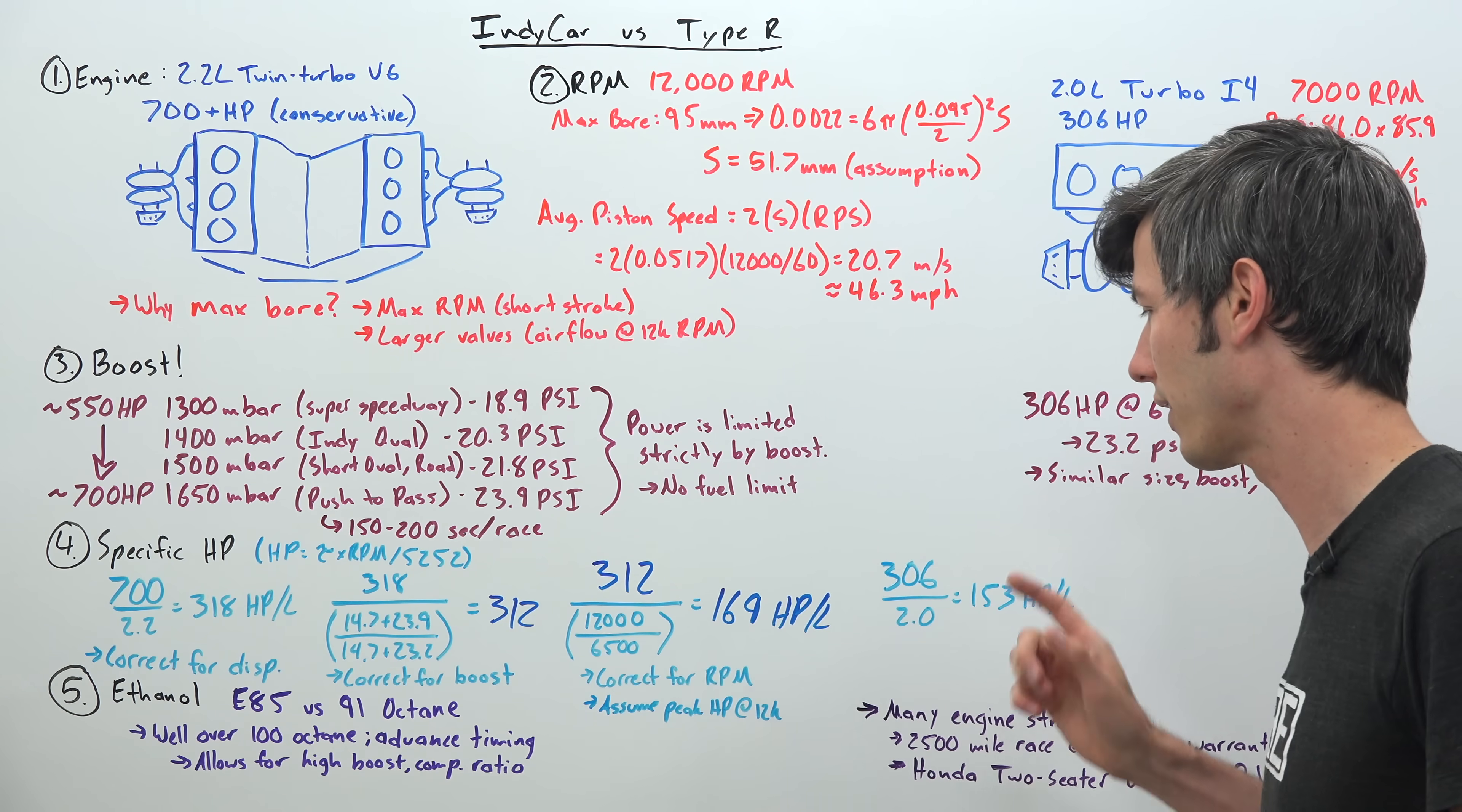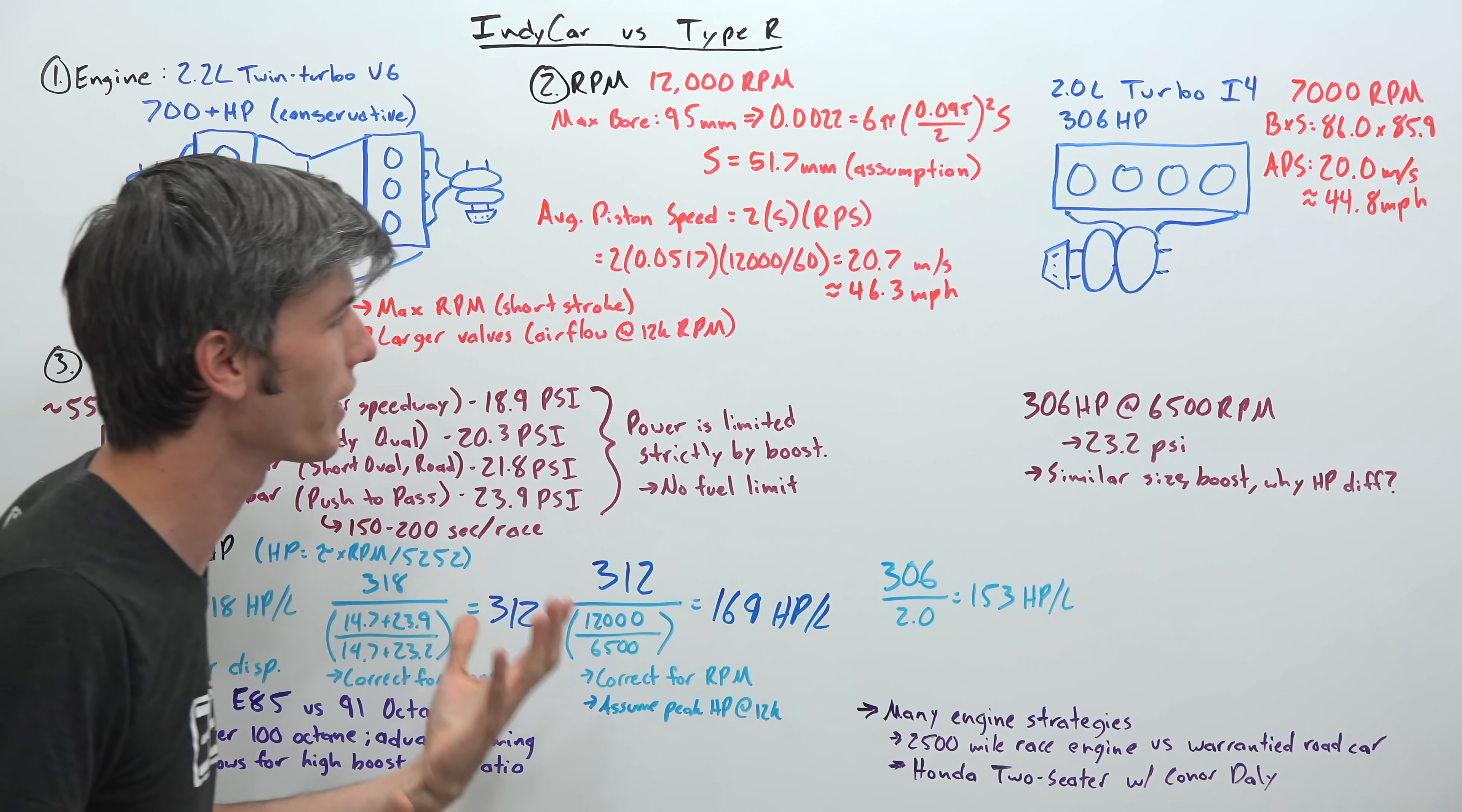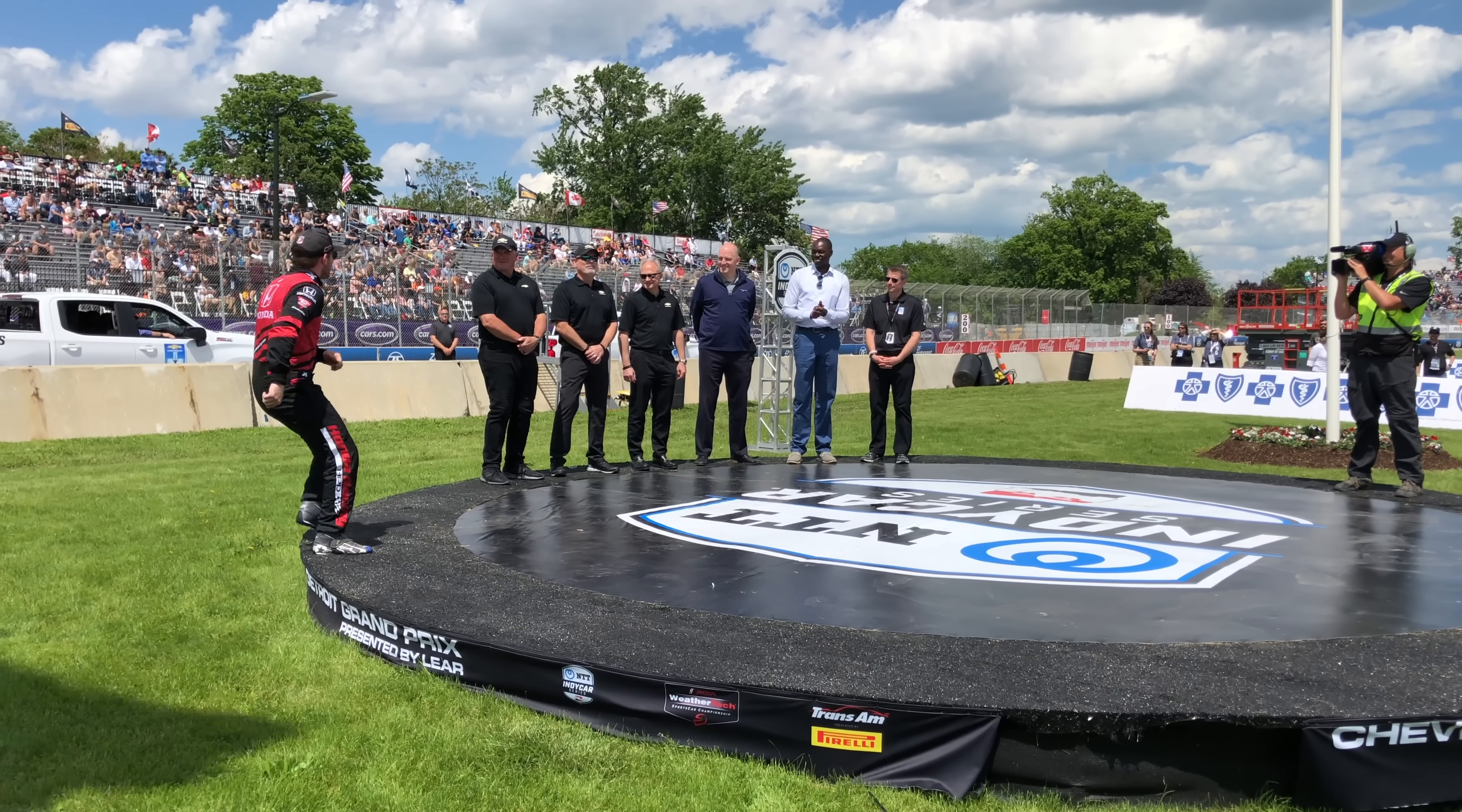So hopefully this has been an interesting thought experiment kind of showing, you know, there's many different strategies towards creating power and different ways of going about it. And so these two engines looking at them on the surface, you know about 2 liters, similar boost, why do they make so much different power? And then kind of breaking that all down. The other thing is, you know, this engine used in IndyCar only needs to last about 2,500 miles versus the Civic Type R of course is coming with a long warranty. So there's differences that go into making engines that have to last forever versus having to last just 2,500 miles.